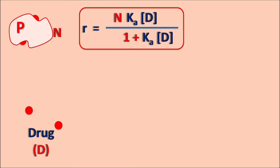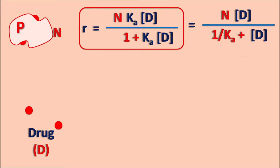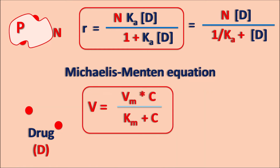This is the final equation from the protein-drug interactions. If we carefully rearrange this equation by dividing the numerator and denominator by Ka, it becomes R equals N·D divided by (1/Ka + D). This equation resembles the well-known Michaelis-Menten equation, which describes enzyme-substrate kinetics: velocity V equals Vm·C divided by Km plus C. The Michaelis-Menten equation can also be applied for protein-drug interactions, where C is the drug concentration, Vm corresponds to N, and Km corresponds to 1/Ka.